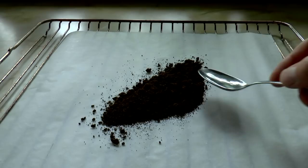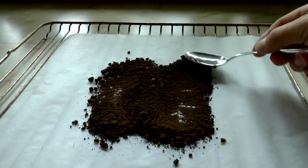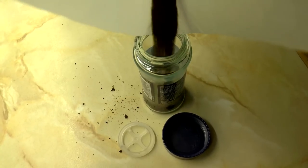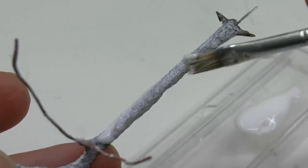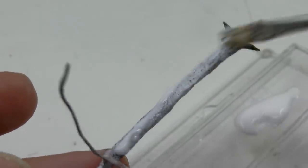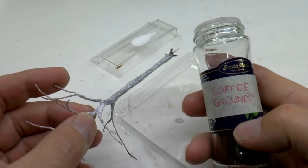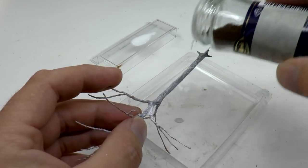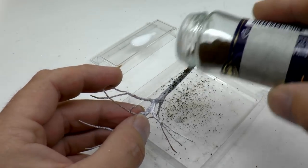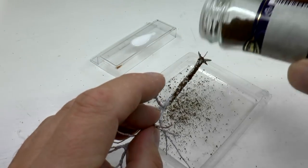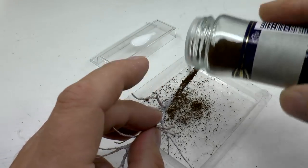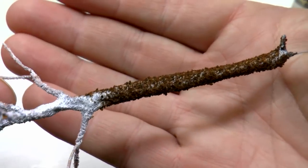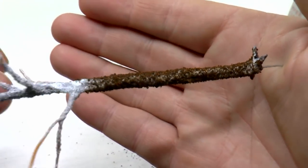For that I use dried coffee grounds. Yeah, it's from my brewer. I just dry it in the oven on 50 degrees Celsius for like 10 or 15 minutes. Then I apply it in the same way as I do with the sand. I add a layer of PVA glue and then I sprinkle the grounds on top of that.